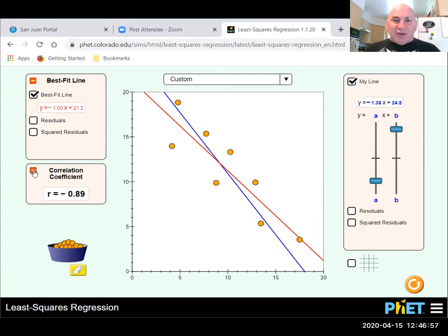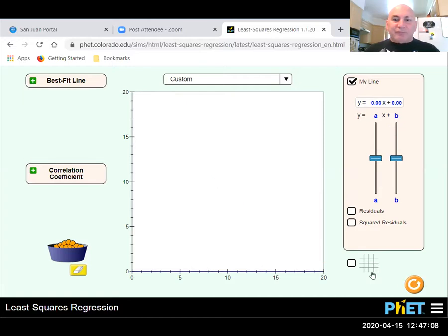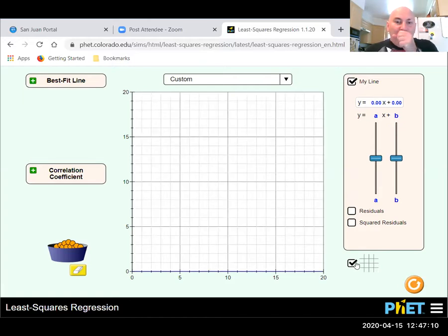Now this one has a correlation coefficient of negative 0.89, which means it is going to have a negative slope. And that's still a pretty strong linear relationship. I'm going to turn the axis on here. Because this time I'm going to try to put things in a parabola.